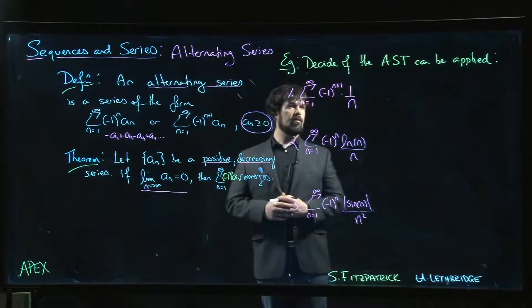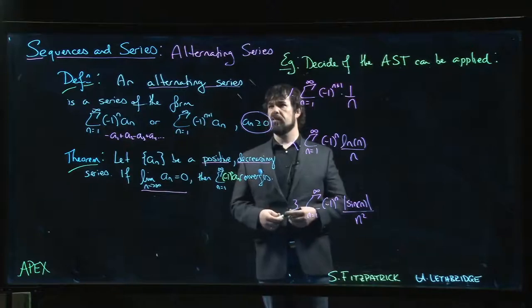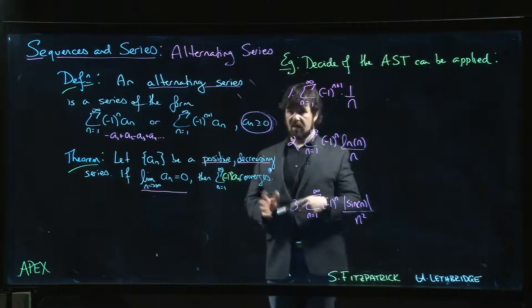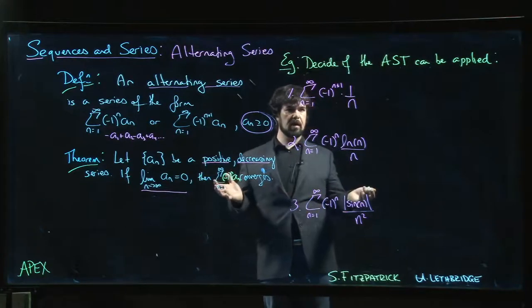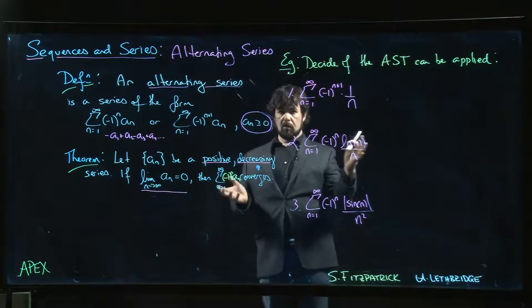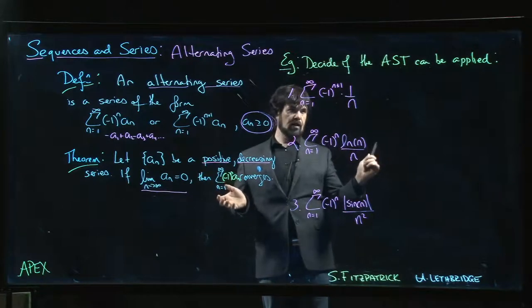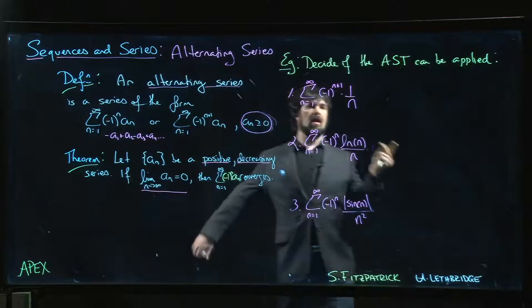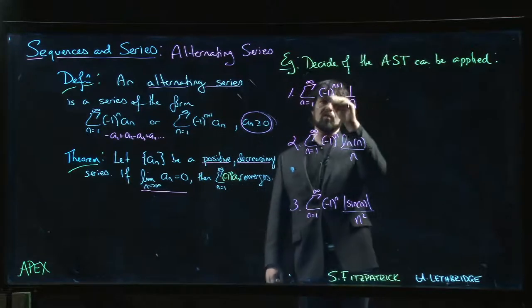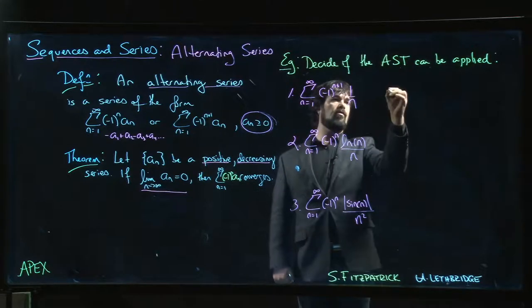All right, so here are three series. We want to know whether the Alternating Series Test, sometimes abbreviated AST, can be applied. The first one is the one we just talked about, it's the alternating harmonic series. The underlying sequence, if we ignore the minus 1 to the n plus 1, is just a_n is 1 over n.